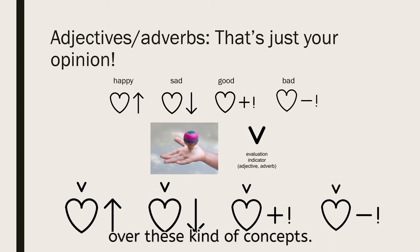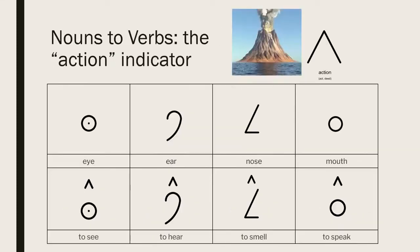For Charles Bliss, a volcano epitomized action and power, so he drew his action indicator from the shape of a volcano. He asked, what does the eye do? It sees. What does the ear do? It hears. And so on. This is how verbs are easily built from nouns.